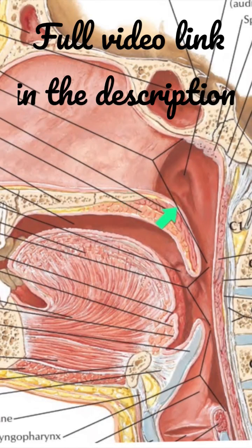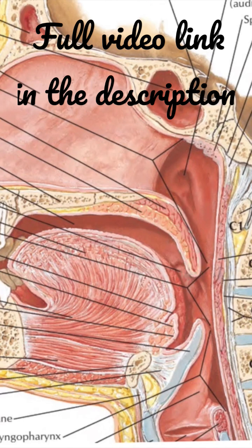The posterior surface is convex and directed backward and upward, and forms the anterior boundary of the pharyngeal isthmus. On each side, it is connected with the tubal elevation by the salpingo-palatine fold.